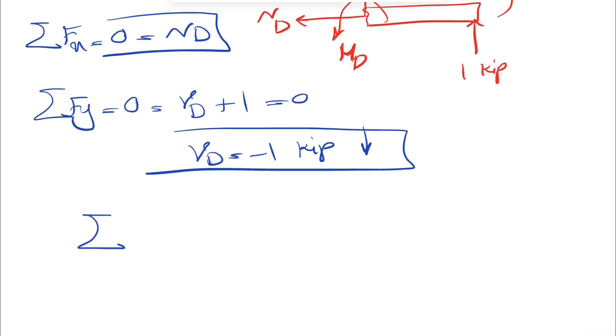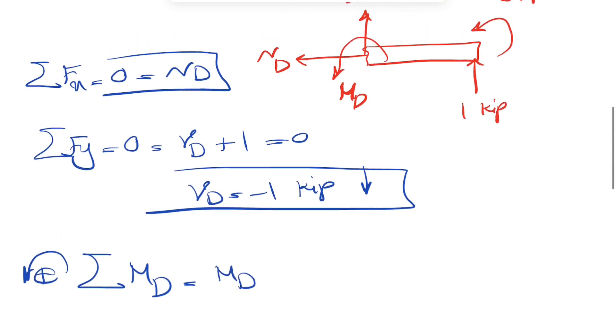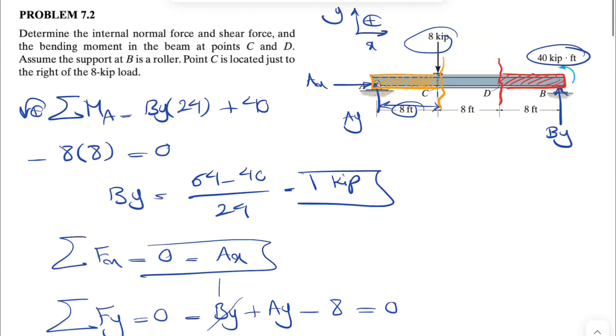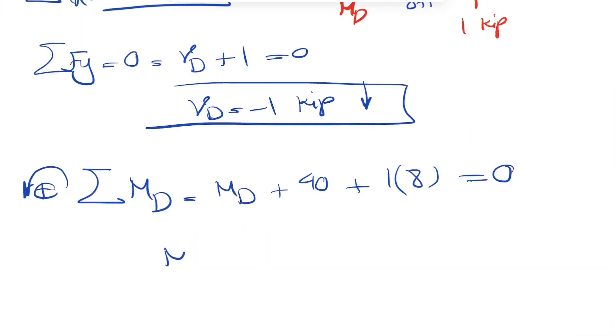And the last one is sum of all moments about D, counterclockwise positive. So it will be Md plus 40 plus 1 kip times the length of this part of the beam. If we get back to the figure, that's also 8 feet. So equals 0. So Md here would be 40 plus 8, 48.